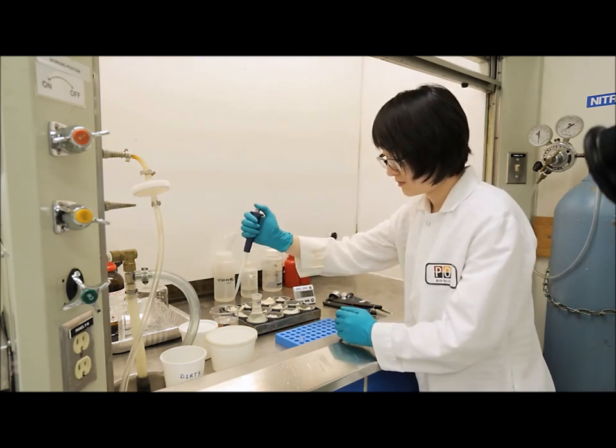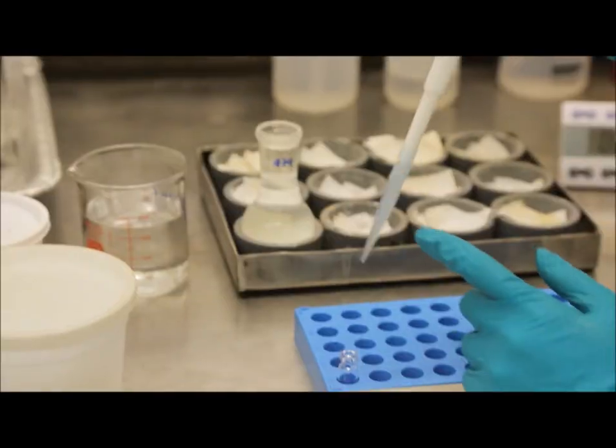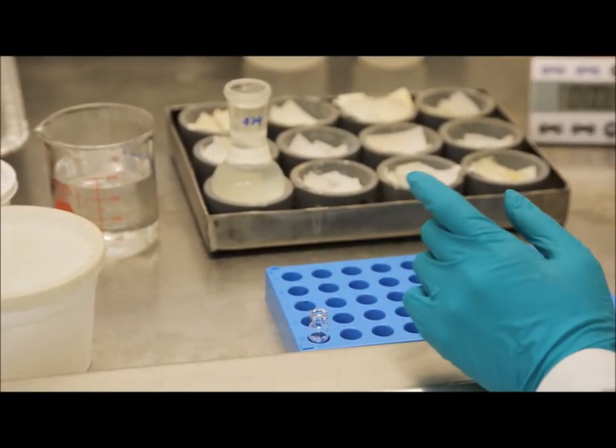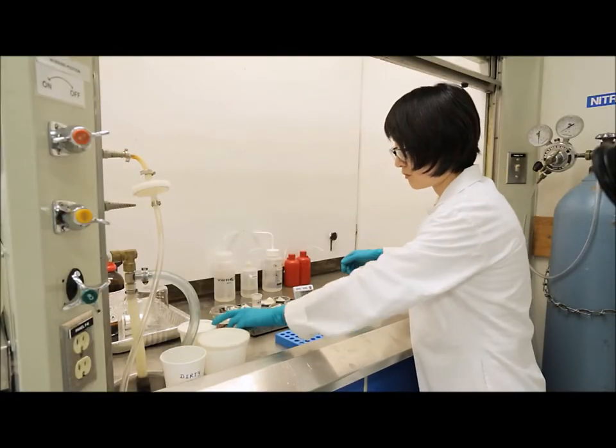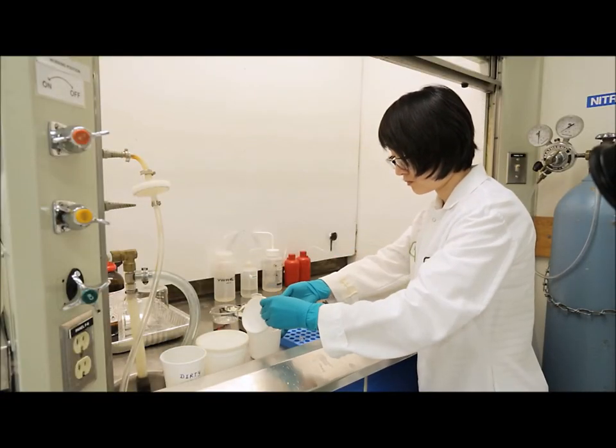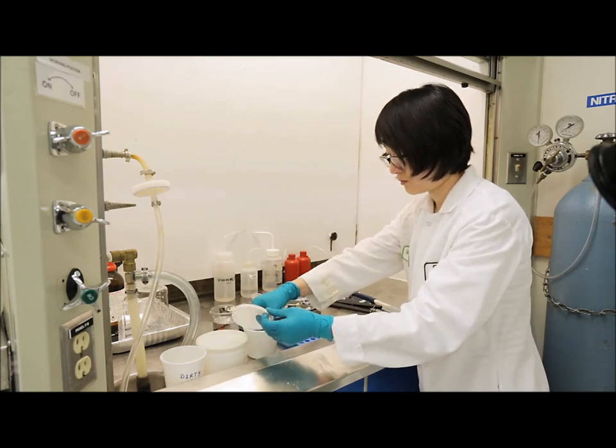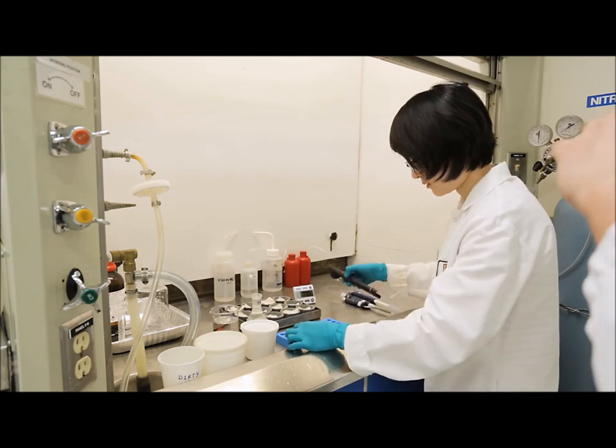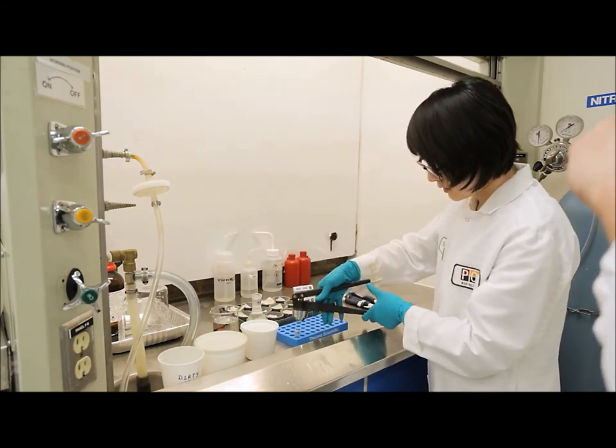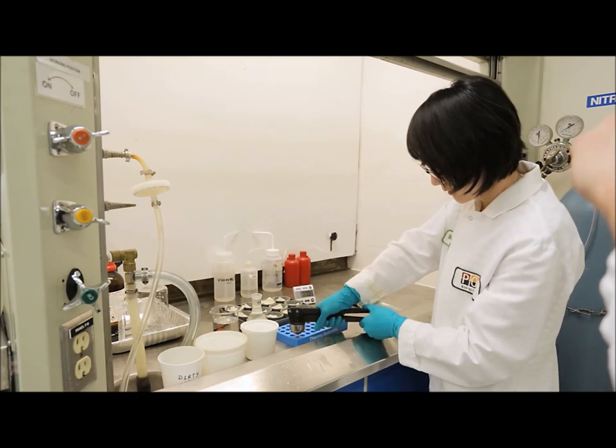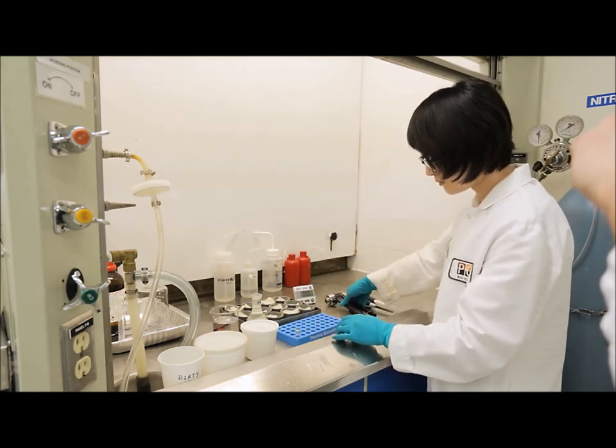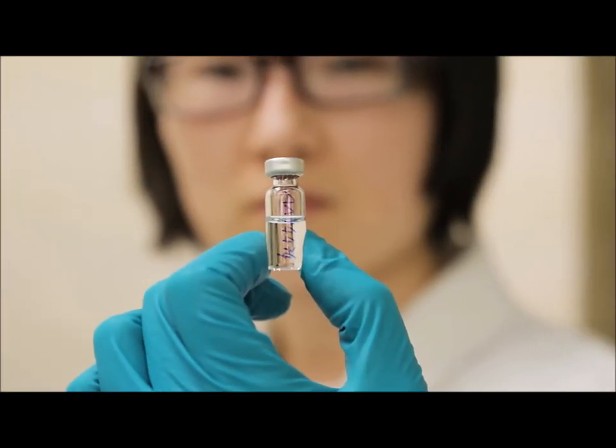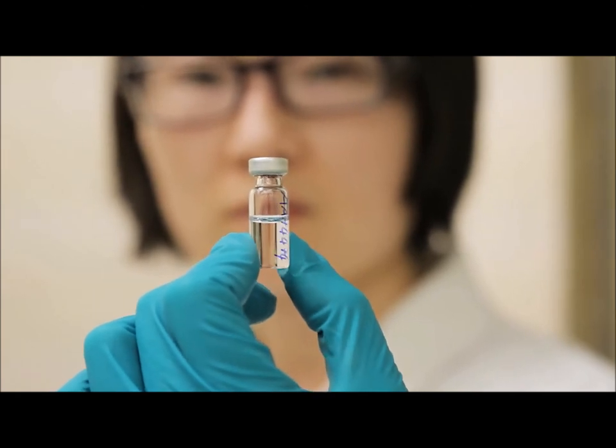Once you've added the heptane layer, the next step is to add one milliliter of heptane to the vial. And after the heptane has been added, we can cap the GC vial. It is important to ensure that the cap is on secure and it's not loose to allow for any of the heptane to evaporate. The sample is now ready to be injected onto the GC.